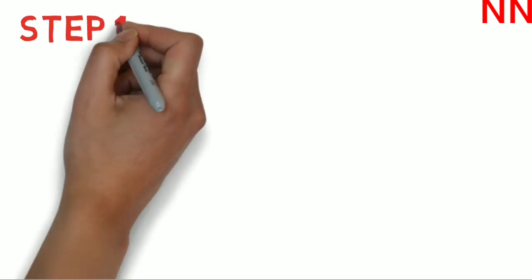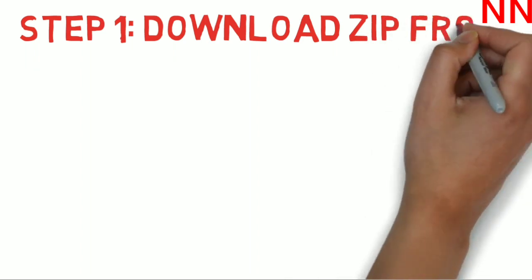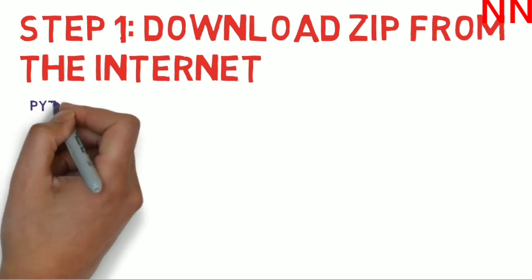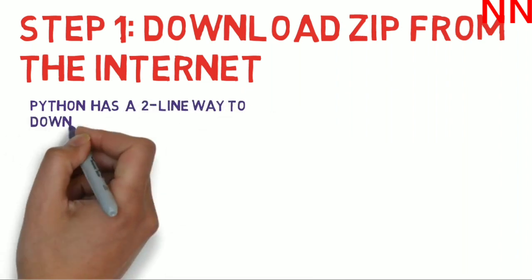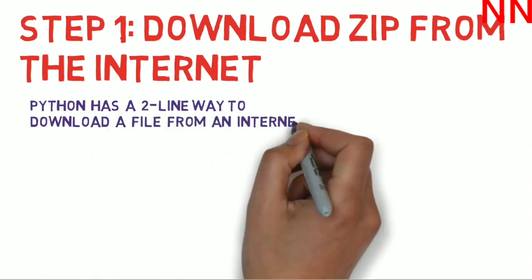Step one is to download the zip file from the internet. Python has a two-line way to download a file from an internet URL and then save it to a file on your local disk. In fact, the first line of this you've already done if you've done our exercise on downloading a URL from the internet.